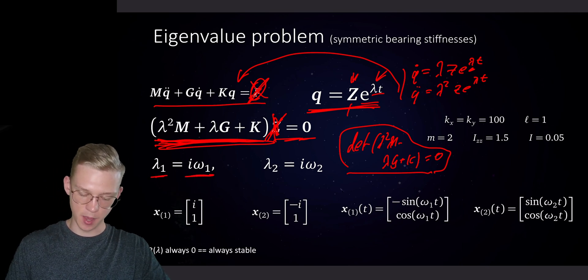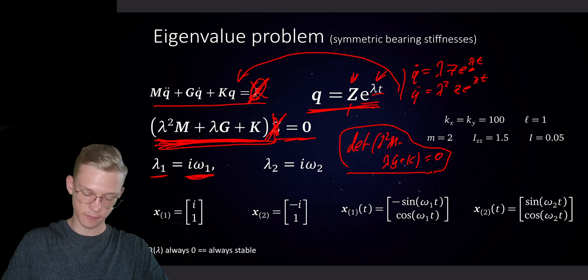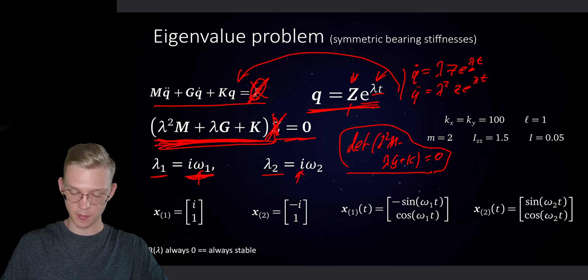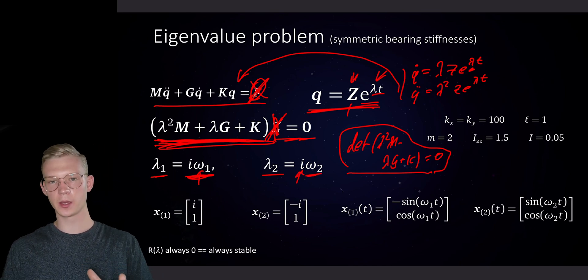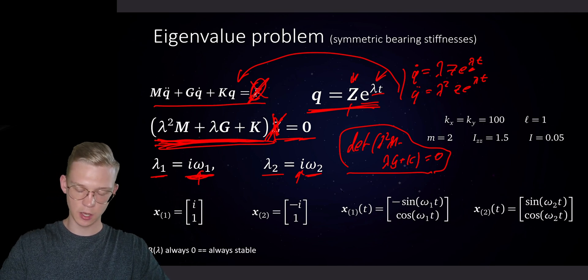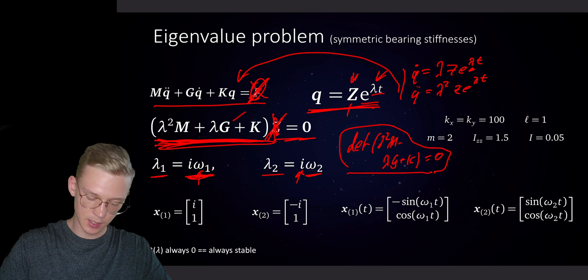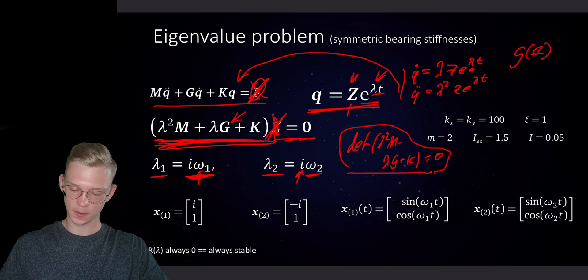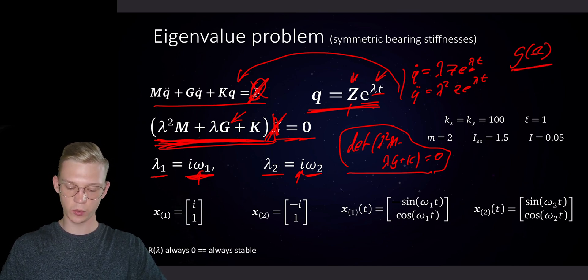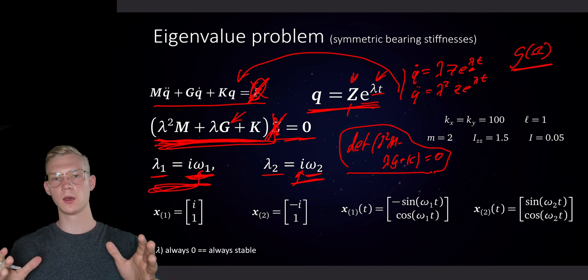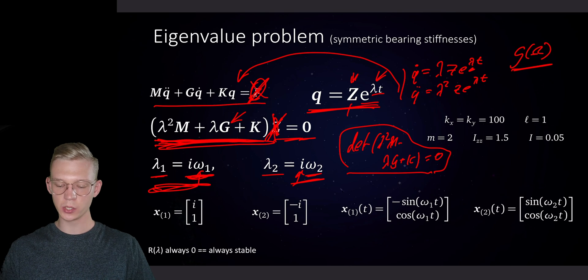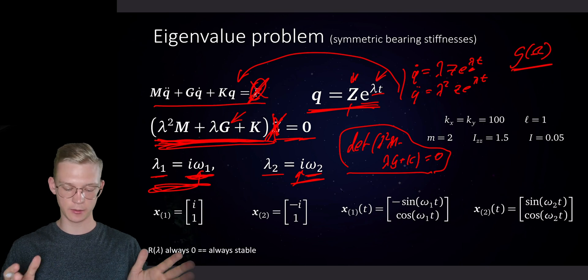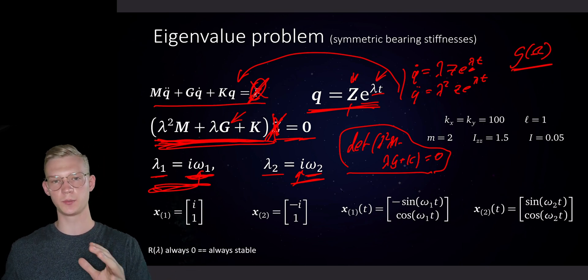So first we have lambda one that is imaginary, an imaginary number times omega one. And lambda two is again imaginary omega two. And this omega is dependent on the rotation speed of our motor. And that dependency is in the G matrix. So the matrix G is actually dependent on the omega, on the rotation. And dependent on the rotation speed, we will get two different eigenfrequencies of that system. So because this is a possibly changing system, we will always get different eigenvalues depending on the rotation speed of our rotor.